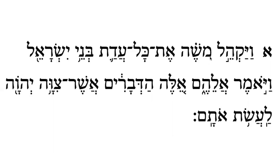Next is a mem with a kholam, which says 'o' — so 'mo.' Then a shin; the kholam also indicates this dot is a shin rather than a sin, so it's doing double duty. Then a segol says 'eh' and the hey is silent, so 'sheh.' Together: 'Mosheh.' In English this is Moses; in Hebrew it's Mosheh.